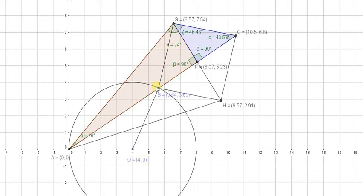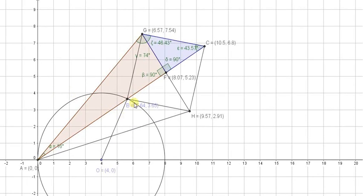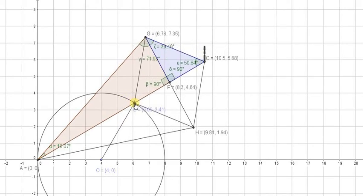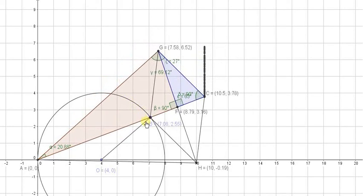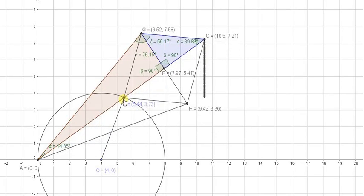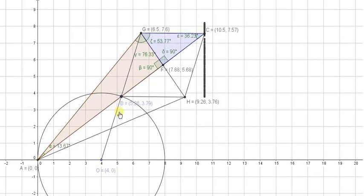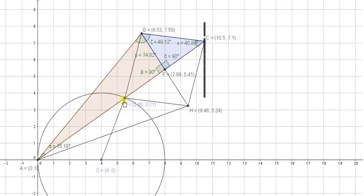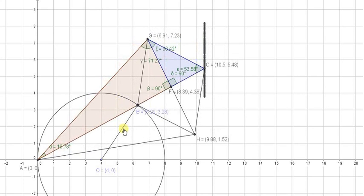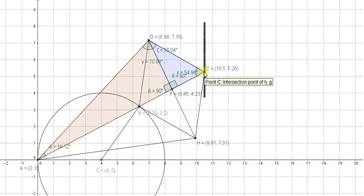We will get this rhombus B, H, C, G as shown. Now, if we rotate this particular point B either in clockwise or anticlockwise direction, then this point C will trace a straight line as shown.